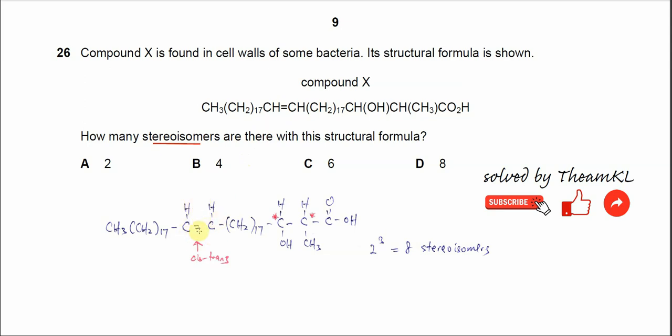Let's start from the C=C double bond. For this C=C double bond, because both carbons are bonded to two different groups, one, two, one, two. So this C=C double bond can form cis-trans.